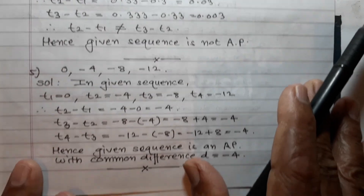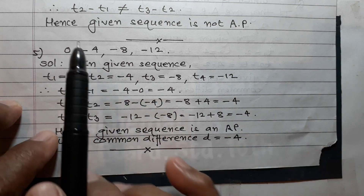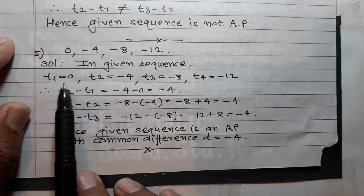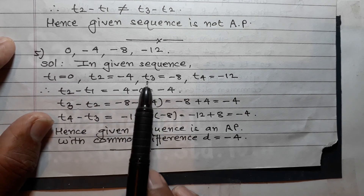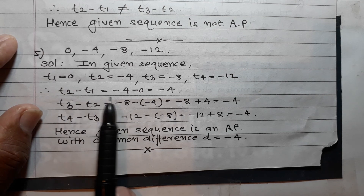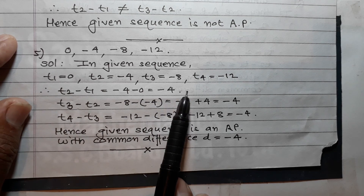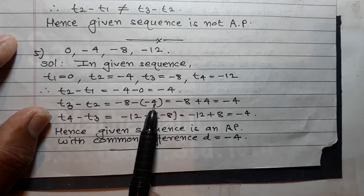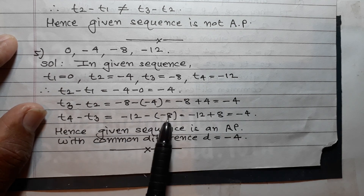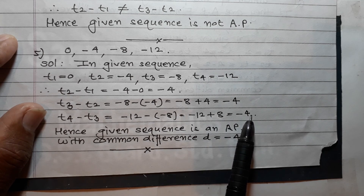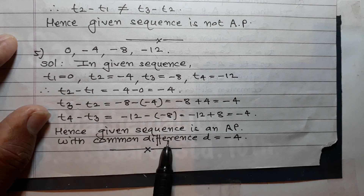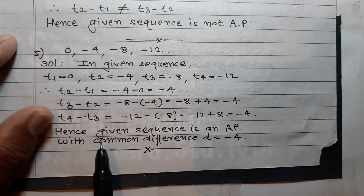Question 5: 0, -4, -8, -12. t1 = 0, t2 = -4, t3 = -8, t4 = -12. t2 - t1 = -4 - 0 = -4. t3 - t2 = -8 - (-4) = -4. t4 - t3 = -12 - (-8) = -12 + 8 = -4. The differences are all equal, and hence the given sequence is an AP with common difference d = -4.